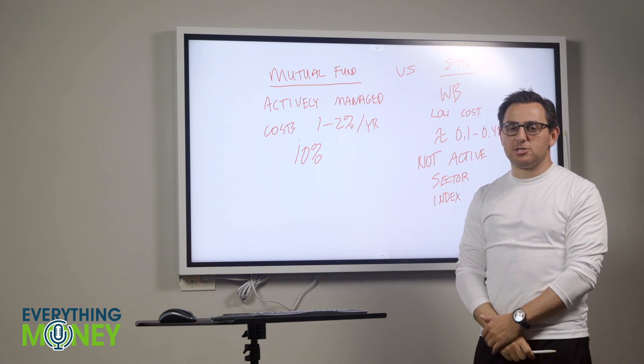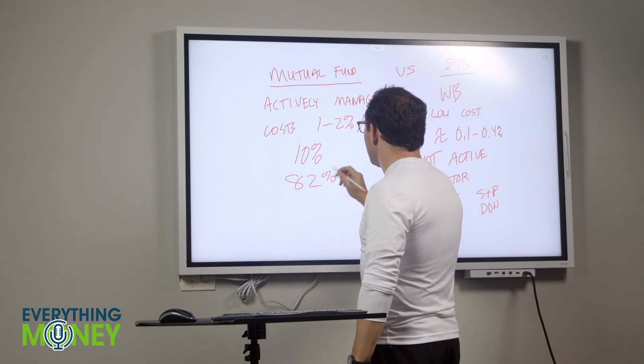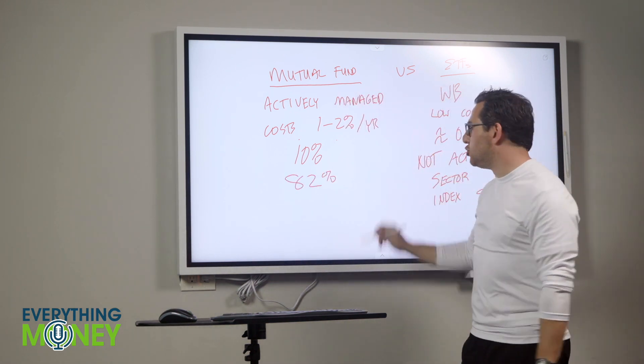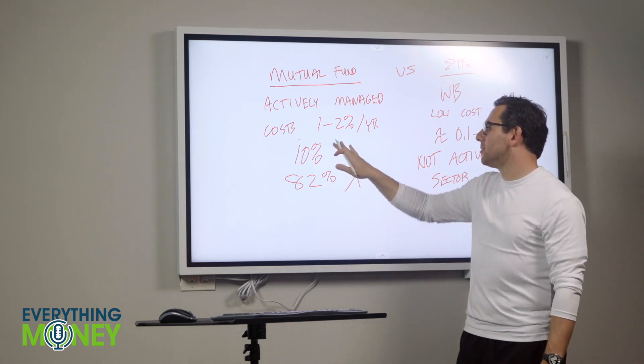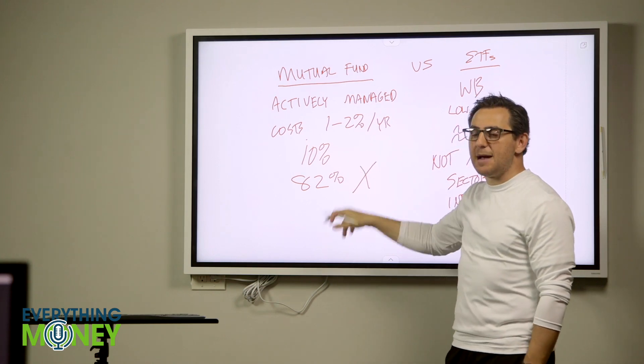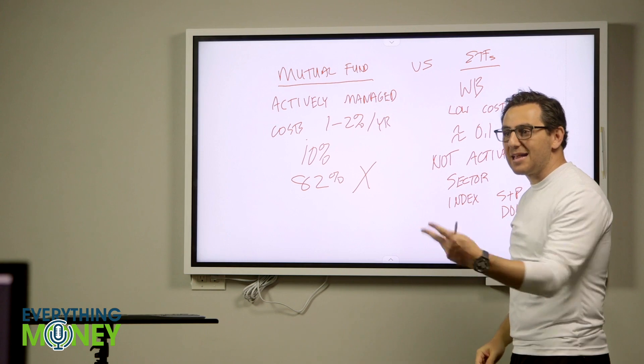Here's an interesting fact that I read many years ago. I don't know how accurate this number is anymore. 82% of actively managed mutual funds do not beat the market. So you're paying this huge return. You're paying this huge fee every year to not beat the market. Well, why don't they beat the market? These are professionals, right? They're actively managed.